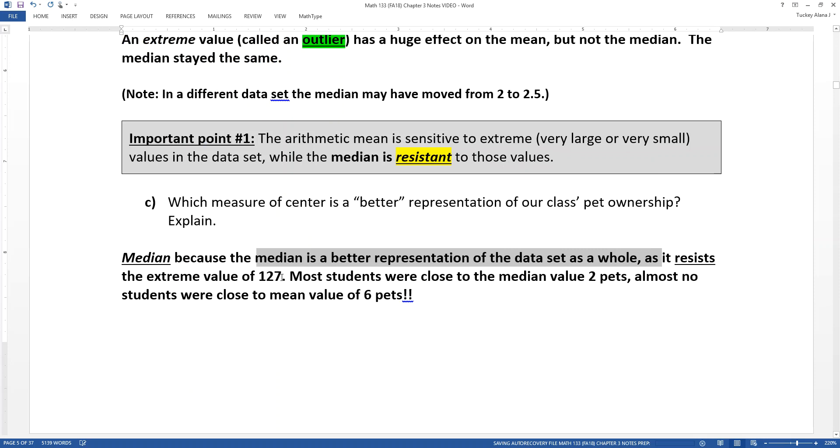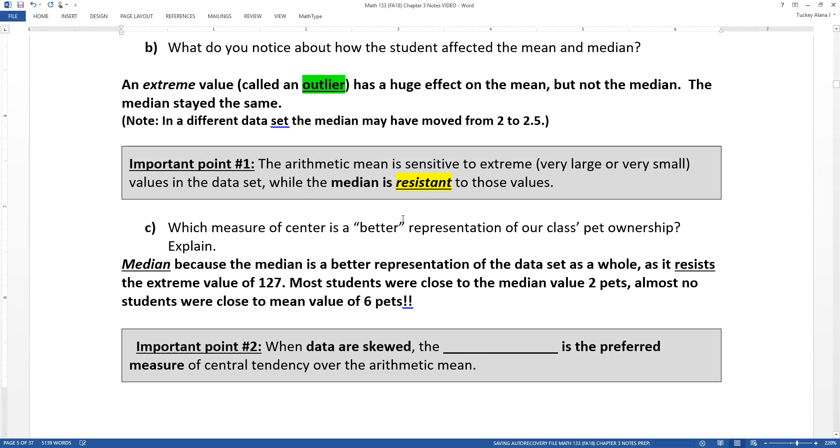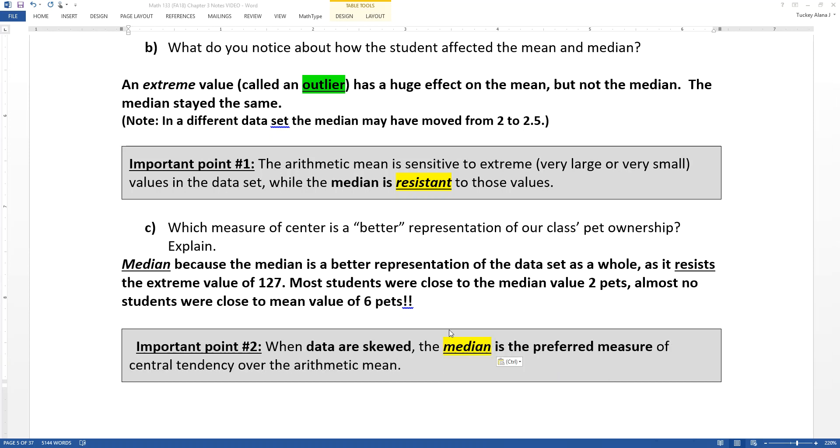I thought I'd add that in. It resists the extreme value of 127, which leads to the important point number two. So important point number one is that the mean is extremely sensitive to extreme values. So if you have outliers, the mean is going to get pulled all this way and that based on the outliers. But the median resists that pull. And that means that the median, when the data set is skewed, the median is the preferred measure of central tendency over the arithmetic mean, precisely because the median is resistant to those extreme values.